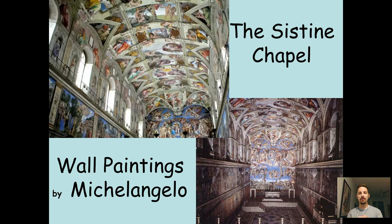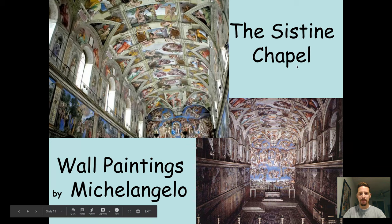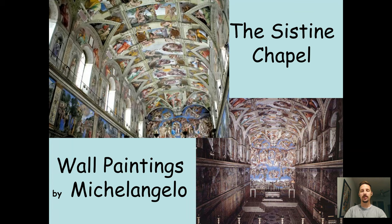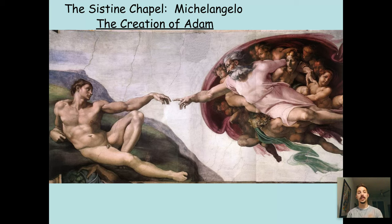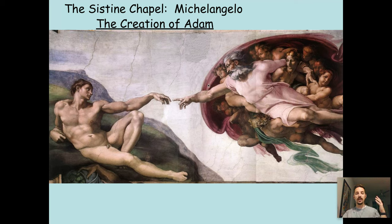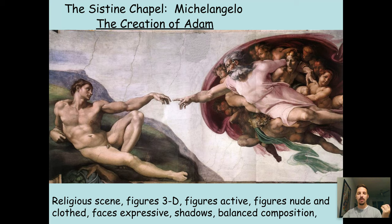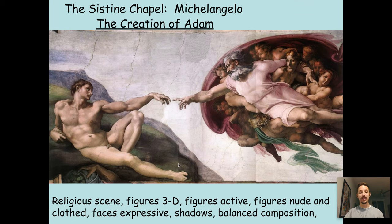This is the Sistine Chapel. The walls and the ceilings were painted by Michelangelo — this is in the Vatican. Just look at that; can you imagine how long that took and how careful he had to be? And this is one of the figures in the Sistine Chapel: the Creation of Adam. This is God and the angels; this is Adam receiving life, receiving his breath. We have a religious scene, three-dimensional figures, they're doing activity, they're showing emotion, we have clothed figures and nude figures, faces are expressive, shadows, the painting responds to light, and there is a balanced composition. Good job, Michelangelo.